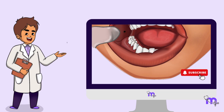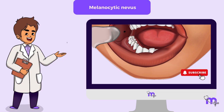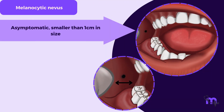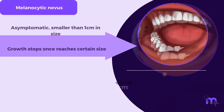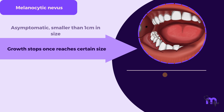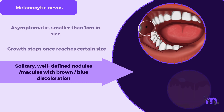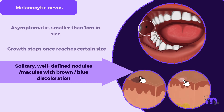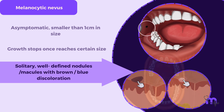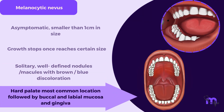The next pigmented lesion considered was melanocytic nevus. These are always asymptomatic and remain smaller than 1 cm in size, unlike malignant melanoma. Once these lesions reach a certain size, their growth usually stops. They appear as solitary, well-defined nodules or macules with brown or blue coloration. The hard palate is the most common location, followed by the buccal and labial mucosa and the gingiva.